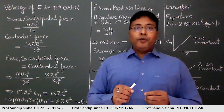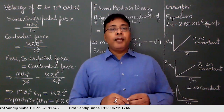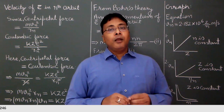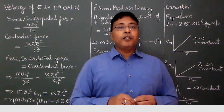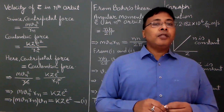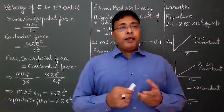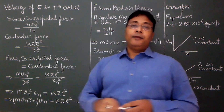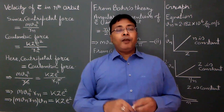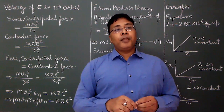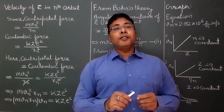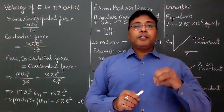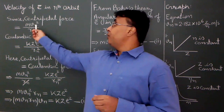The magnitude of centripetal force was mv²/r. When an electron revolves in a circular orbit around the nucleus, a centripetal force acts on it. The magnitude of centripetal force will be equal to m·vn² upon rn, where vn is the velocity of electron in the nth orbit and rn is the radius of the nth orbit.